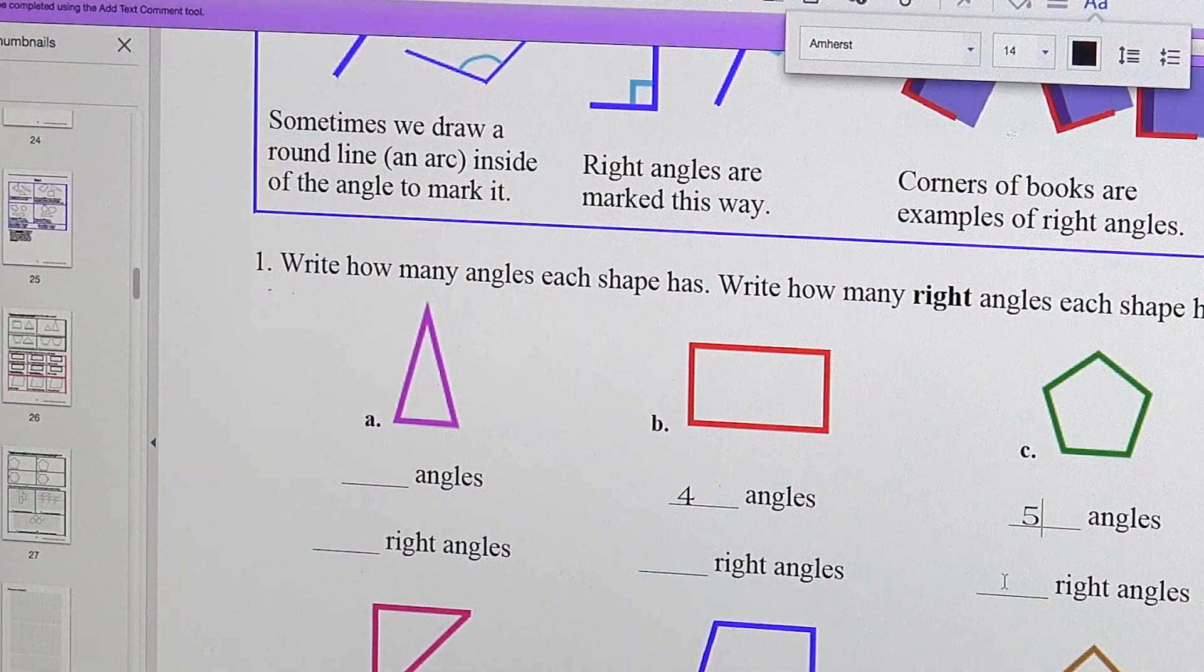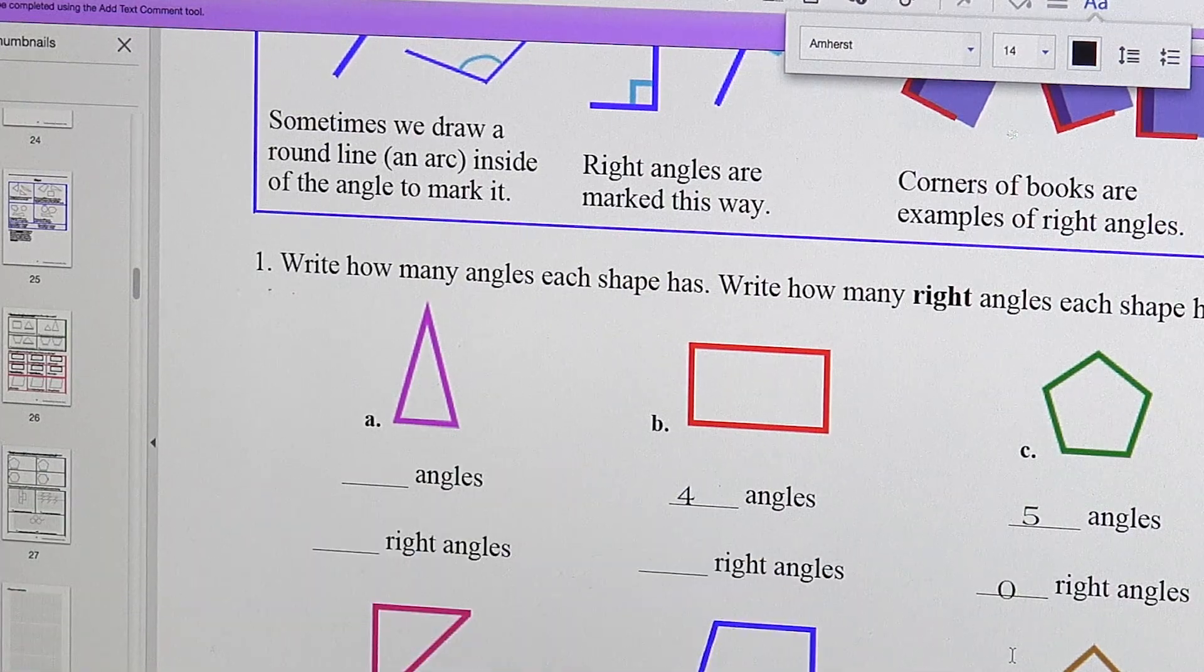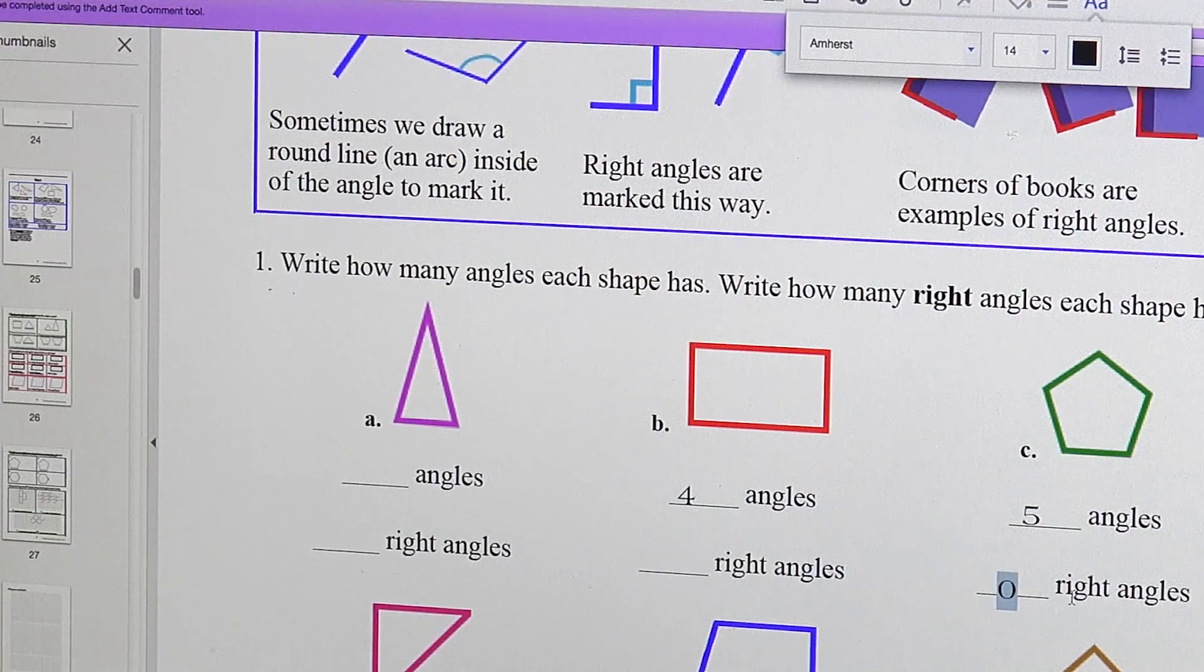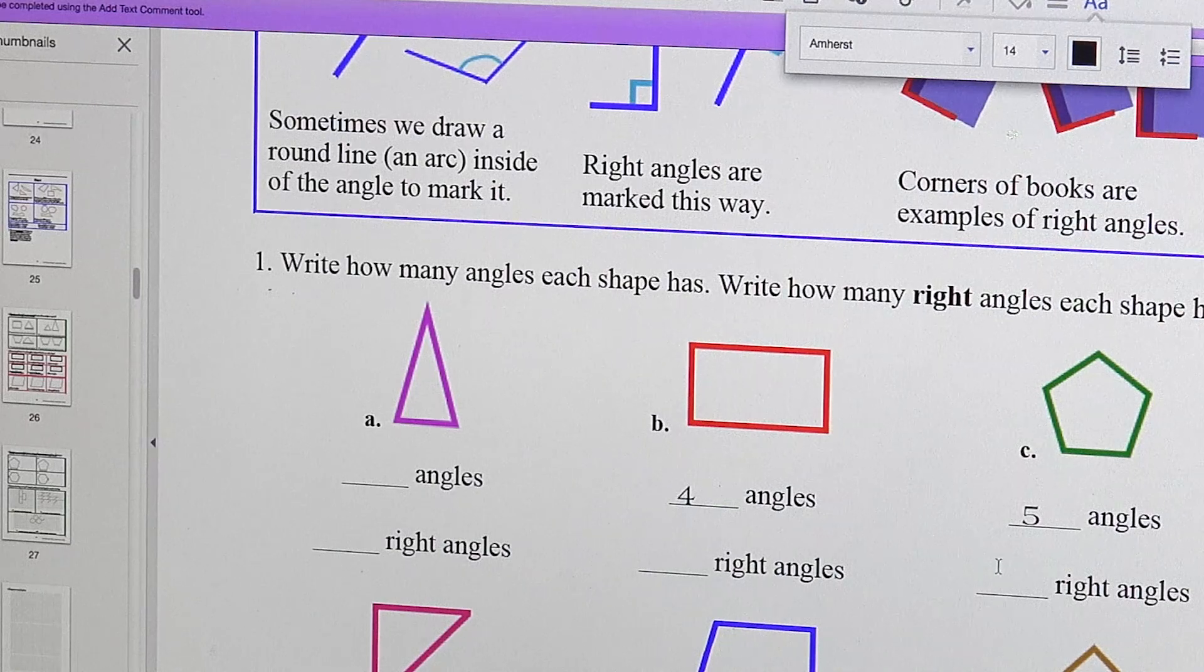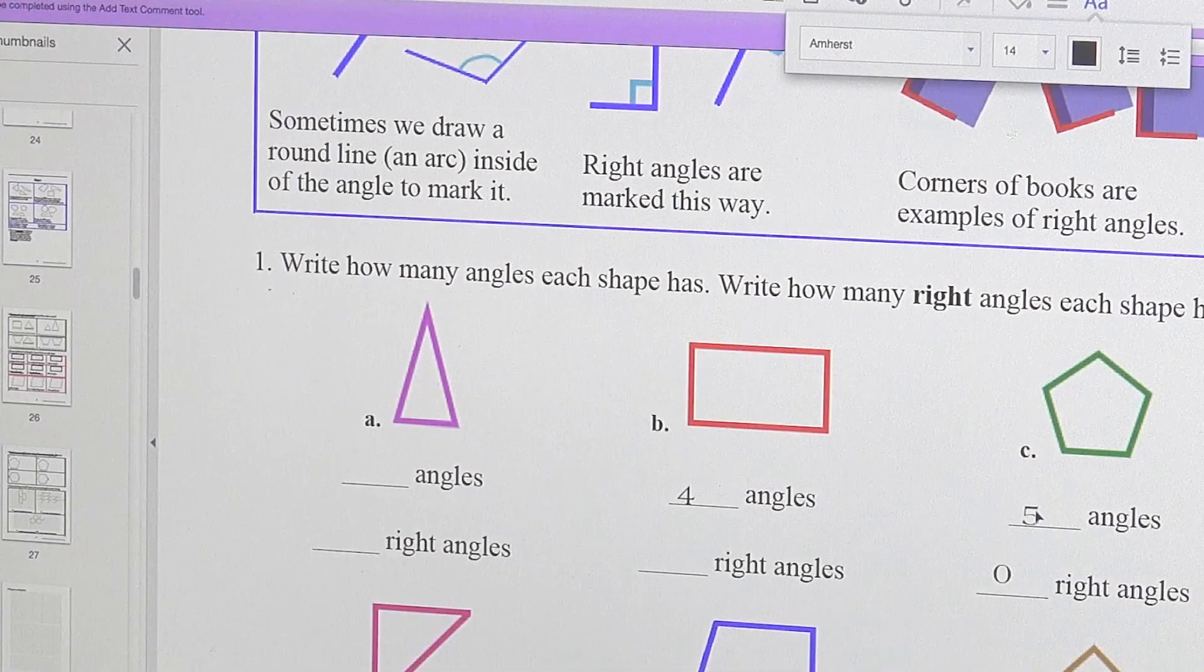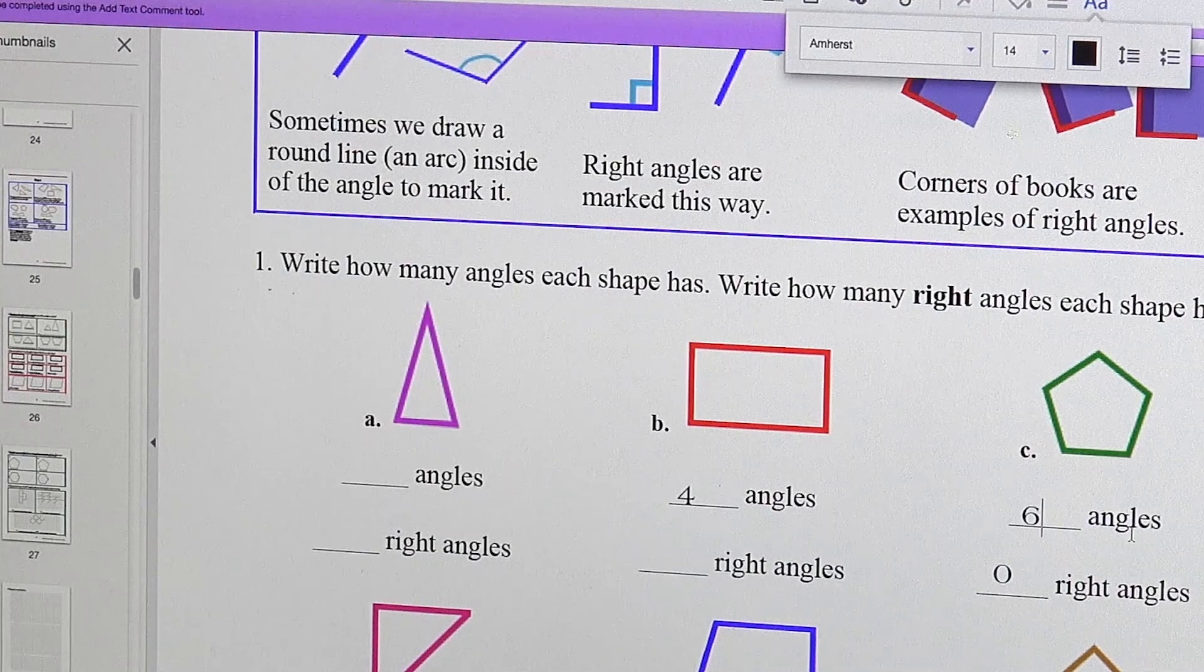Sometimes your answers might not end up exactly on the line. That's okay. You can come here and delete it or erase it. You can try again and put your cursor a little bit higher like that. You can also go back to whatever you wrote previously and change it.